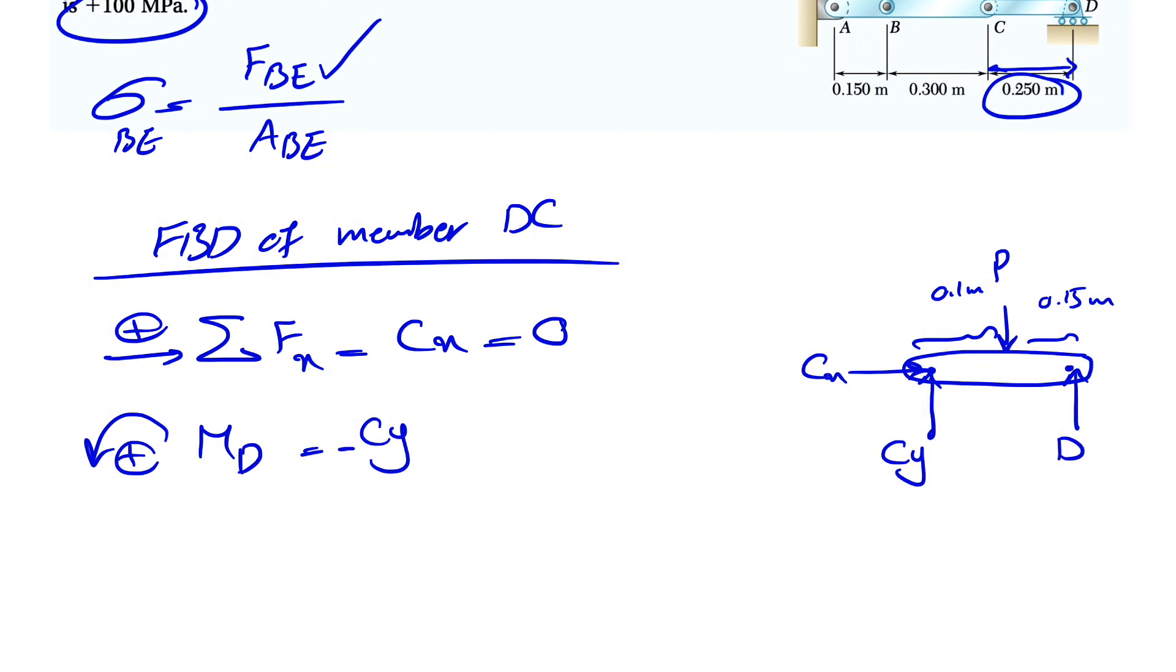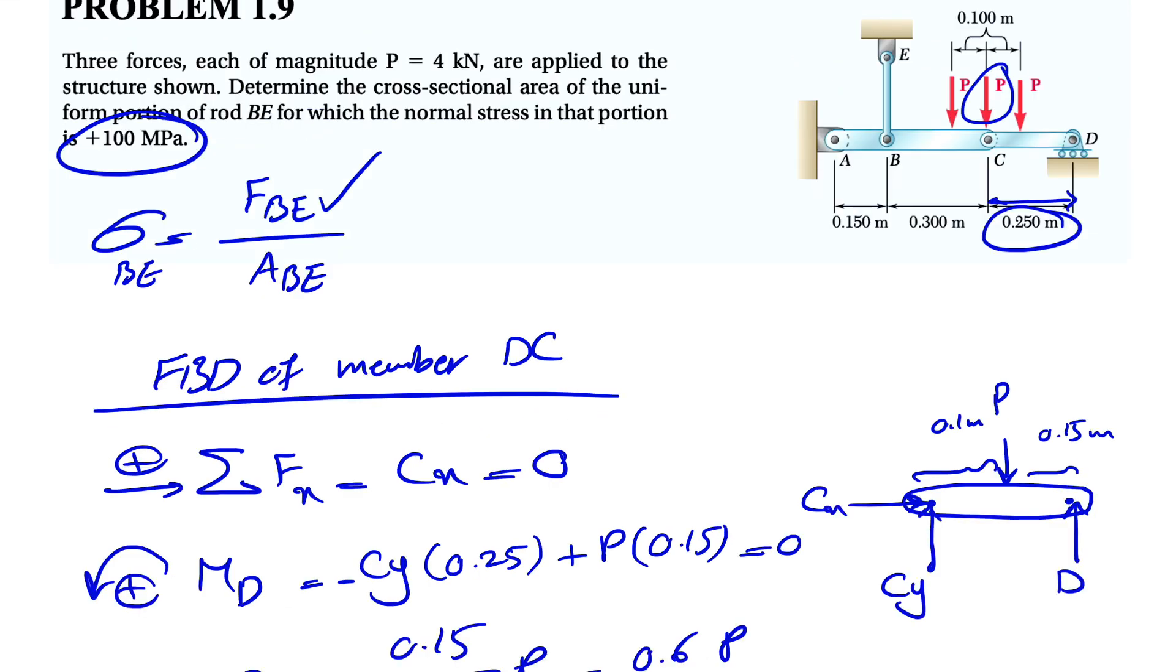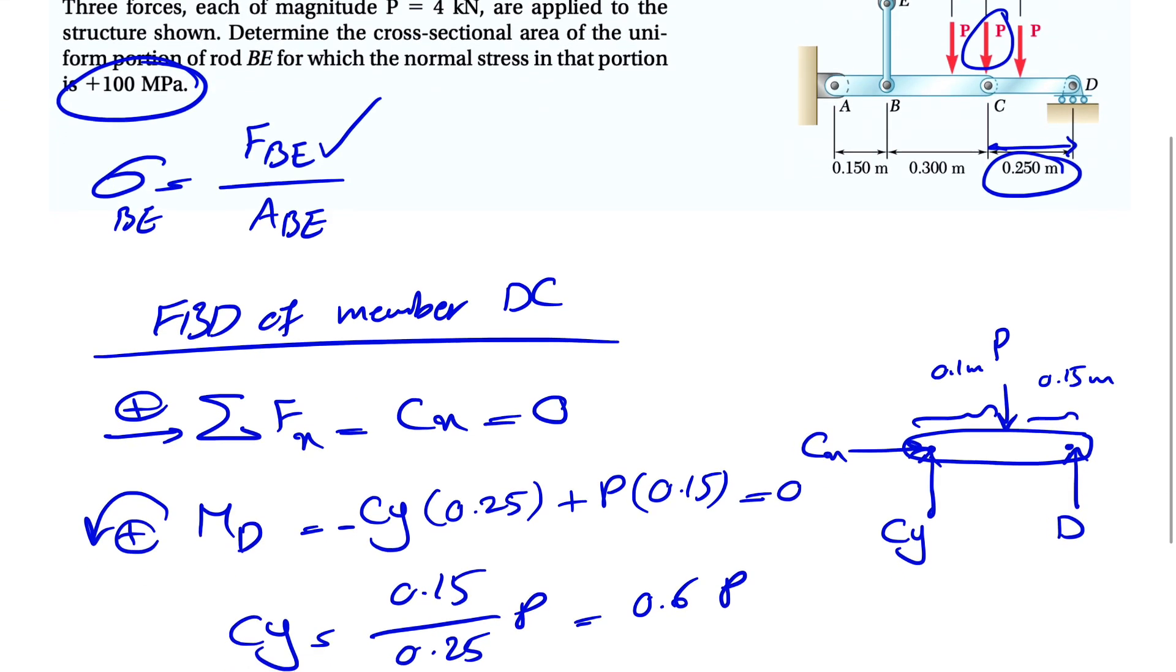Basically, we have the moment of Cy, which is a clockwise moment, so negative times the distance from C to D, which is 0.25, and we have the moment of P, which is counterclockwise, so this will be equal to zero. Our Cy would be 0.15 over 0.25 times P, which will be 0.6P.